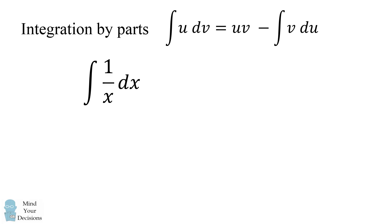Let's use the formula to evaluate the integral of 1 over x dx. We'll set u to be 1 over x and dv to be dx. du will equal negative 1 over x squared dx and v will be equal to x.